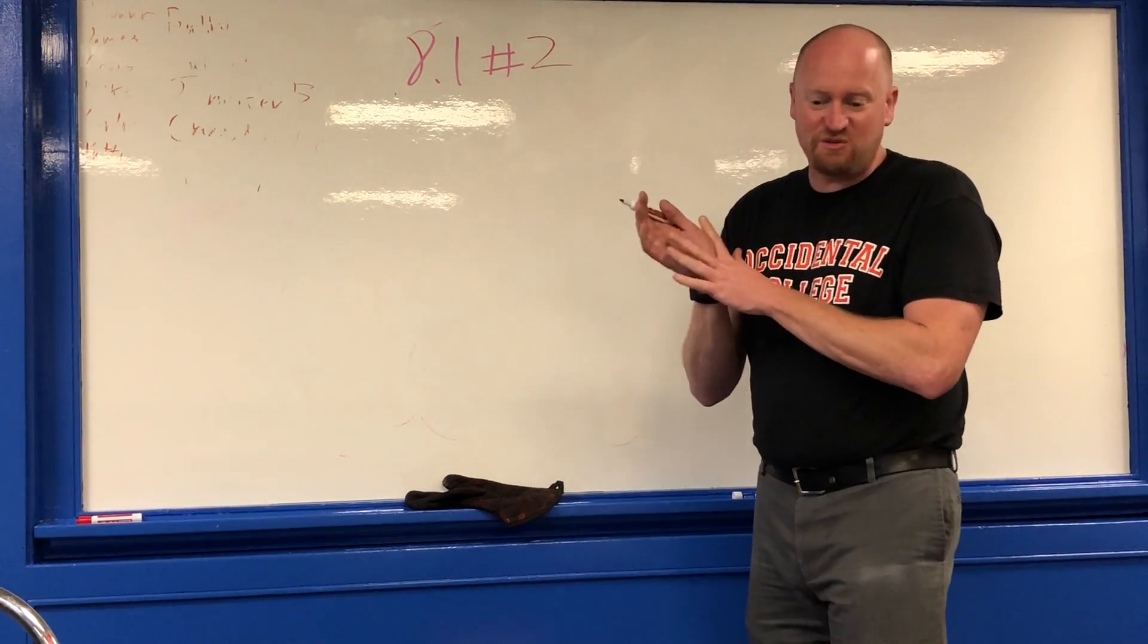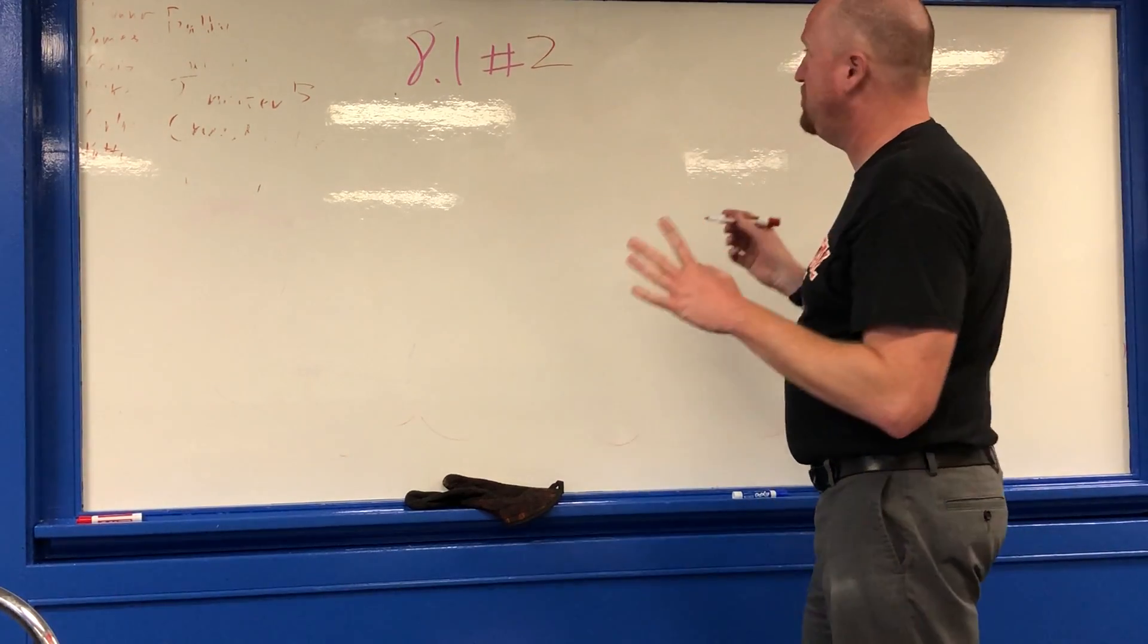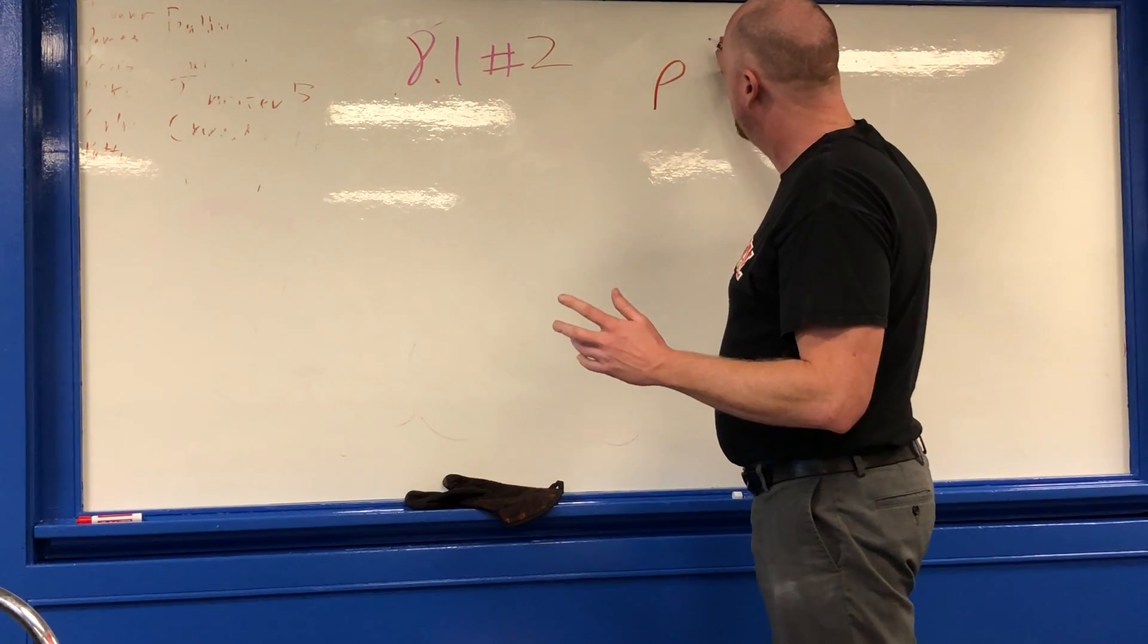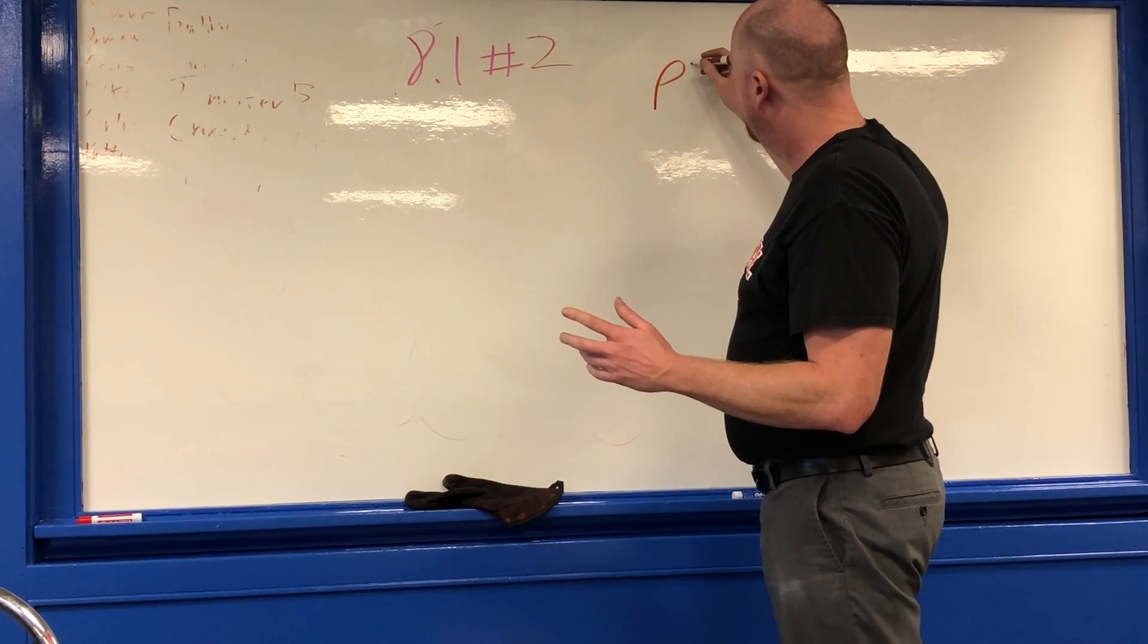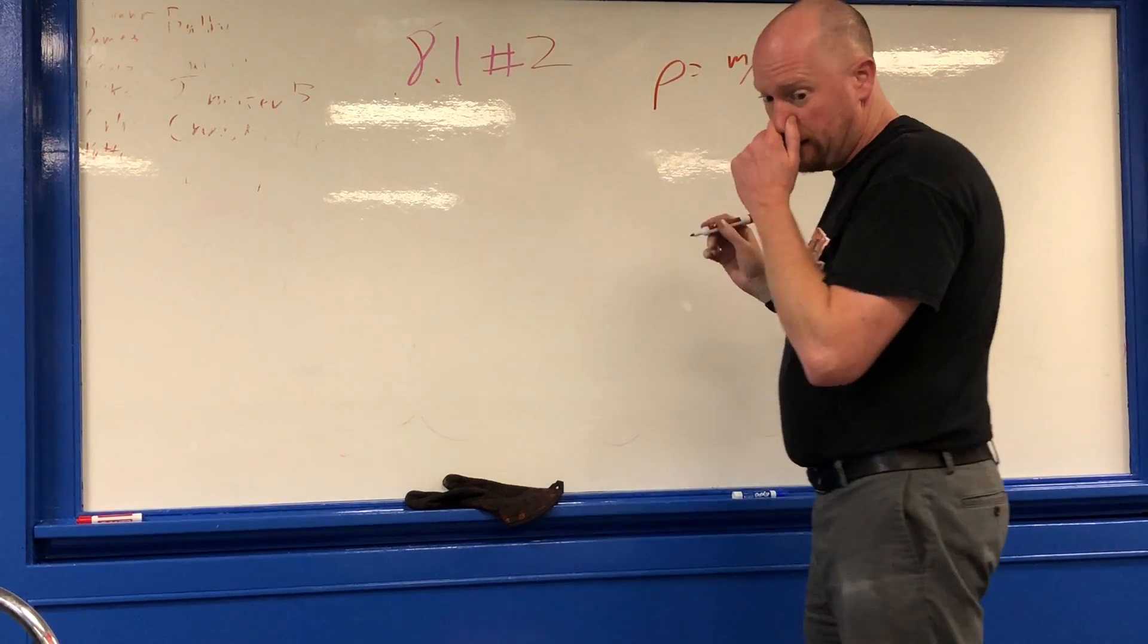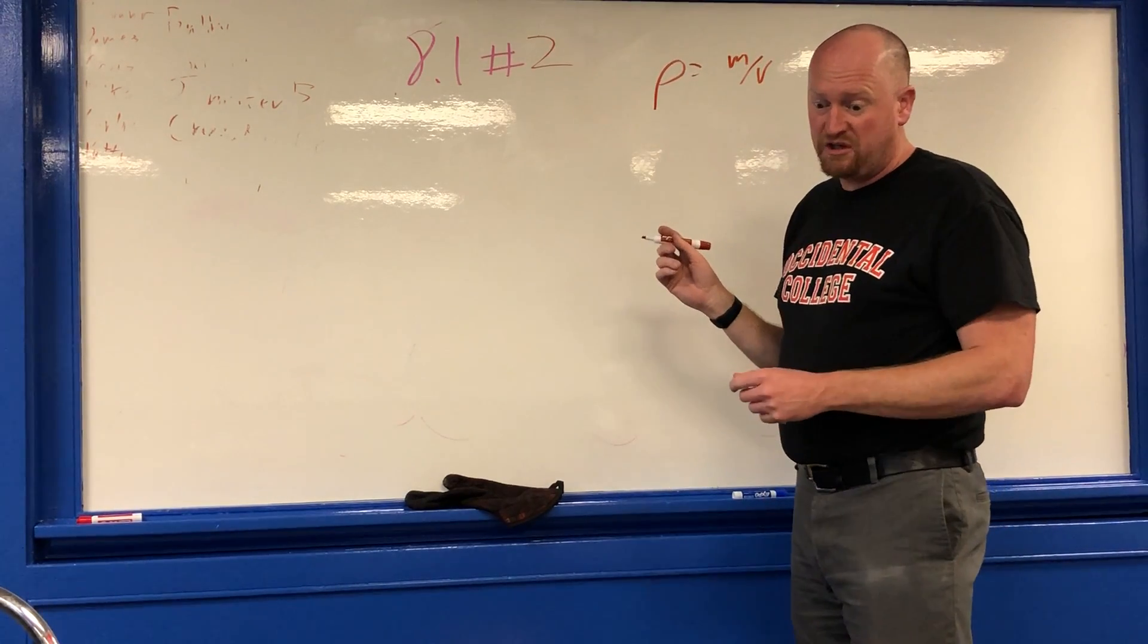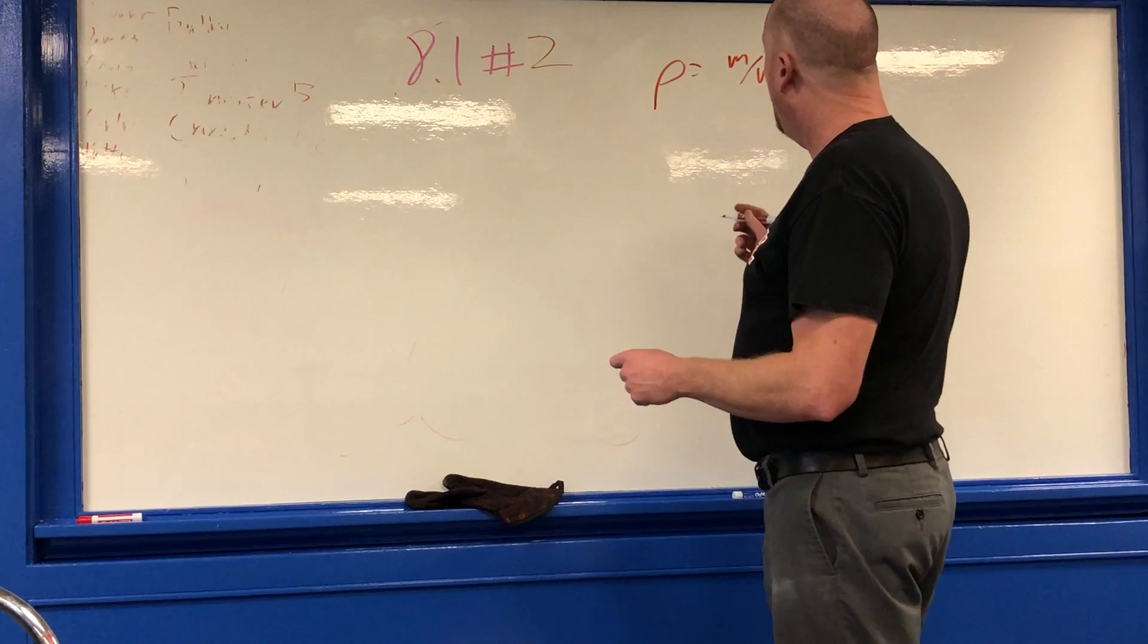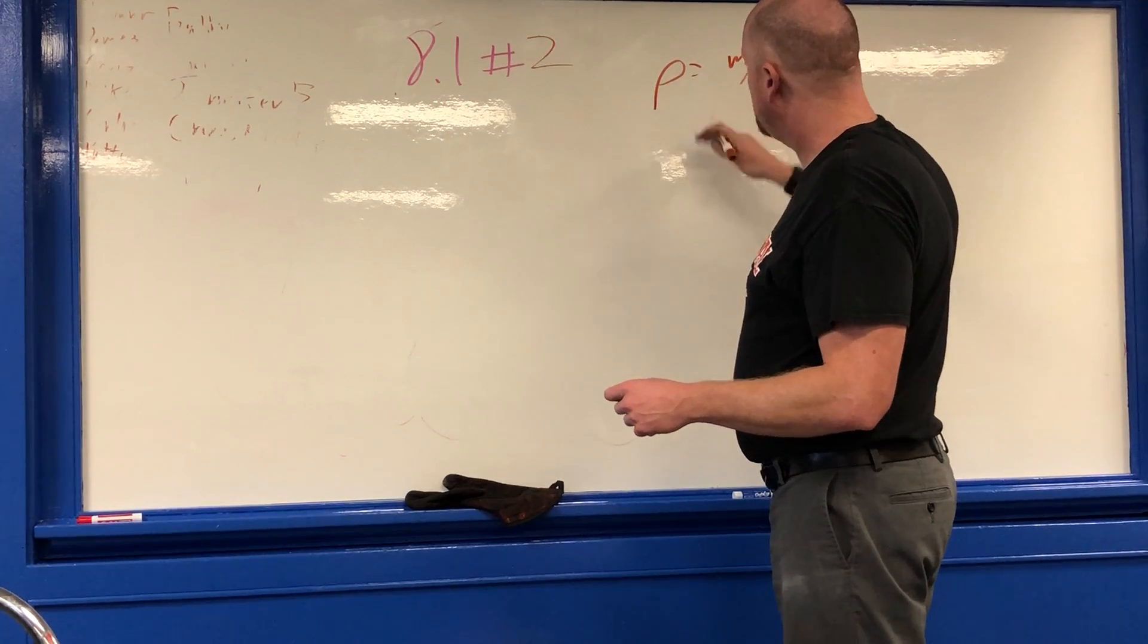So the question we've got to figure out is, what would be the mass of that statue? So ρ is equal to m over v, and my question is, what is going to be the mass here?